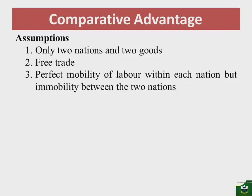Therefore there is perfect mobility within but immobility between nation A and B. Assumption four: we assume constant cost of production, meaning that over time as we continue in the production process, our costs will not be changing. Whatever level of output we have, our costs will not be affected.